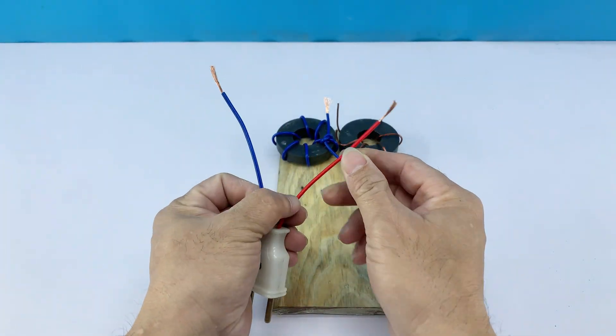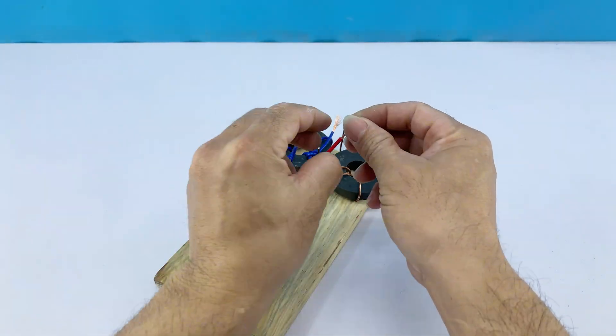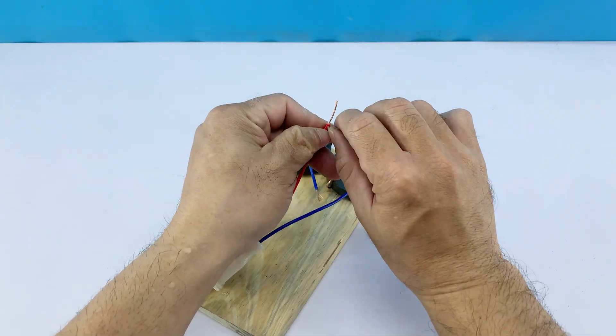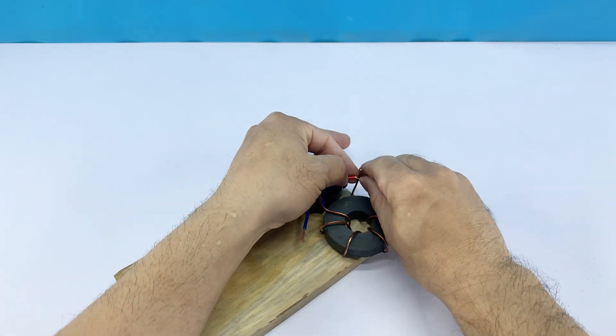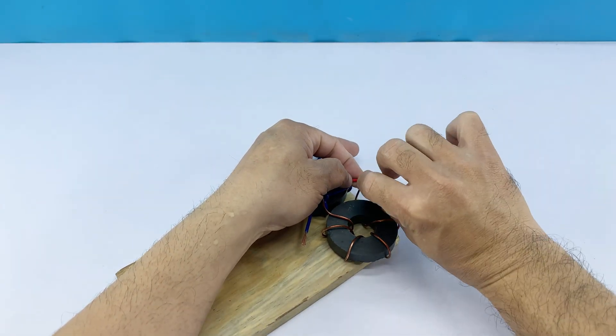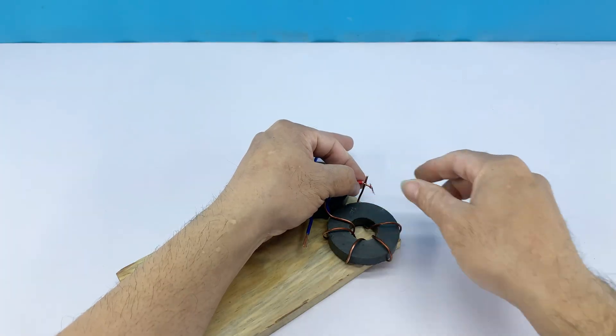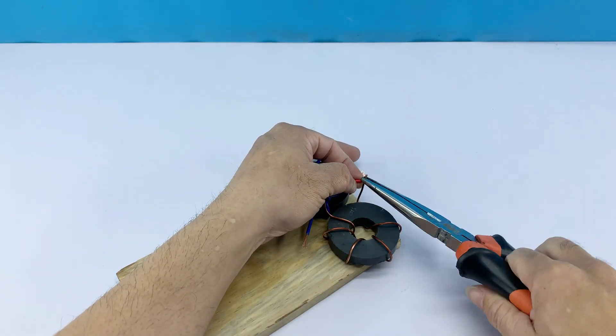With the coils secured, it's time to connect the power source. I'm taking a standard electrical plug with its wires. I will connect the wires from the plug to the blue ends and the copper wire wrapped around the magnet, carefully twisting them together to ensure good electrical contact.